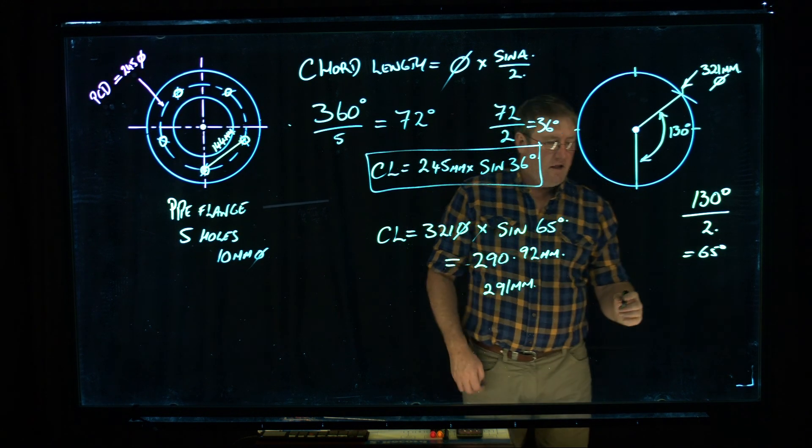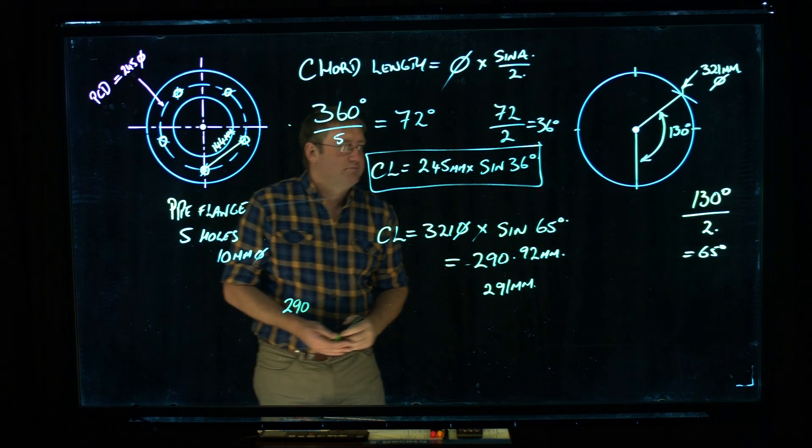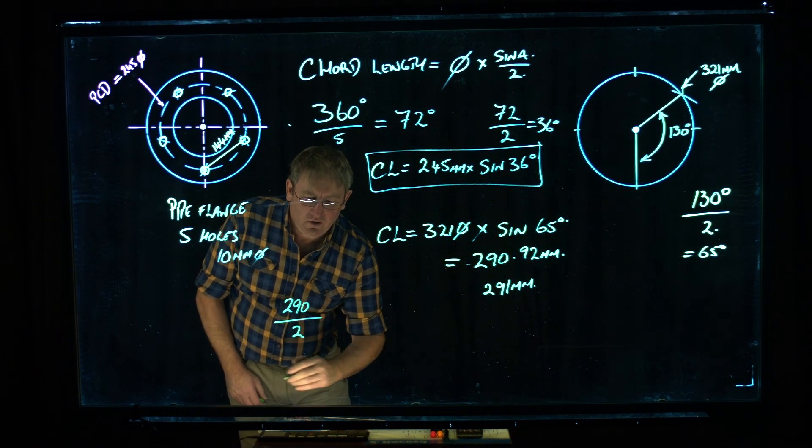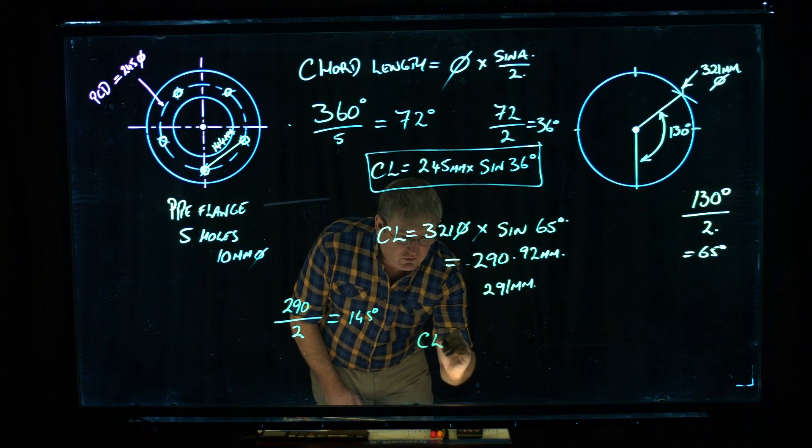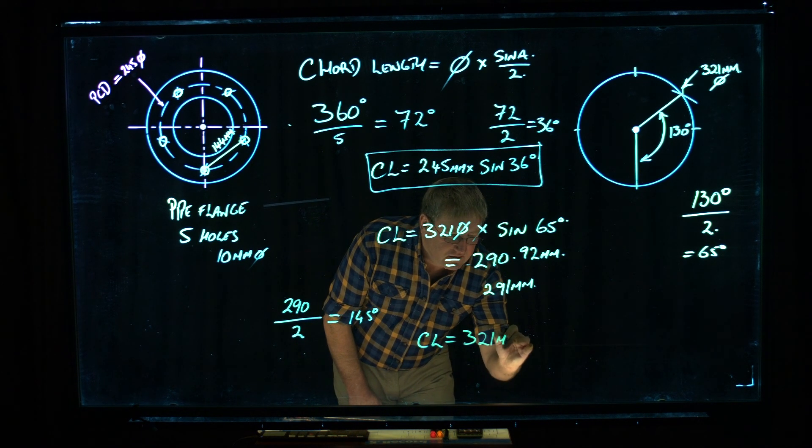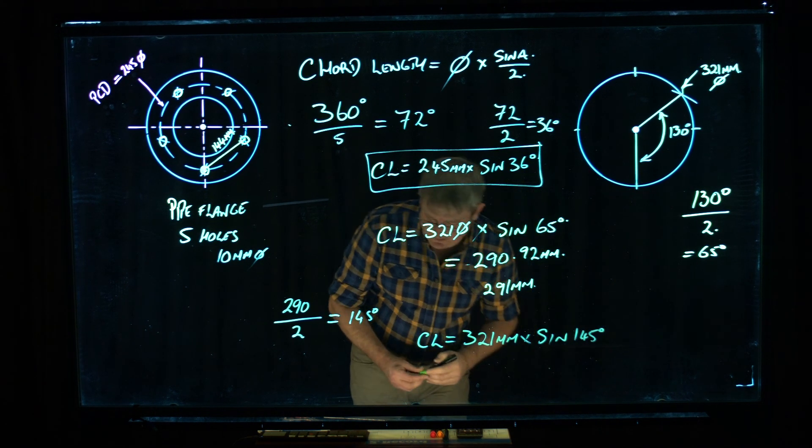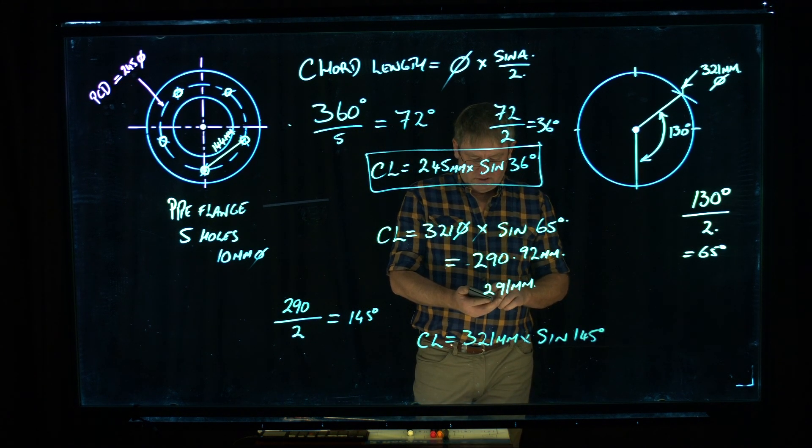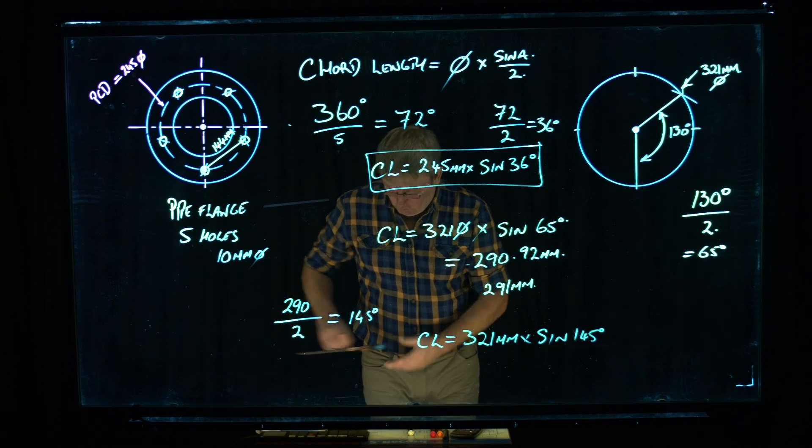Let's say you wanted to go to an angle of 290 degrees. Well, you can do exactly the same thing, so you're going to divide it by 2, and you have 145 degrees, that's going to be in your formula. So this time the equation would be CL for chord length equals 321mm times sine 145. So I'll do that on the calculator. 321 times sine 145 equals, and it gives me 184mm.